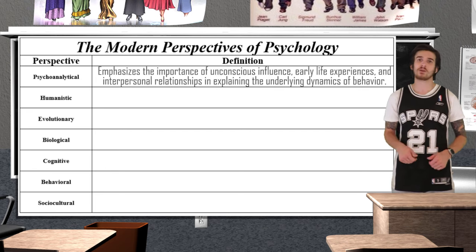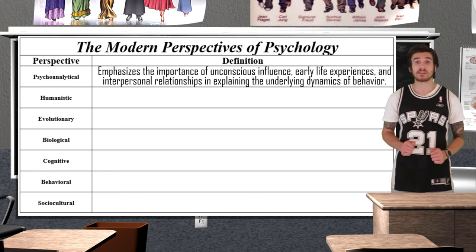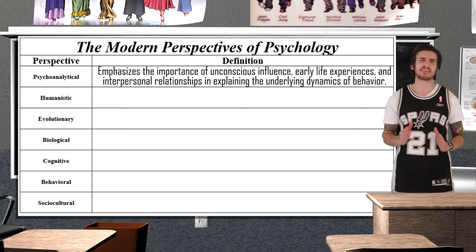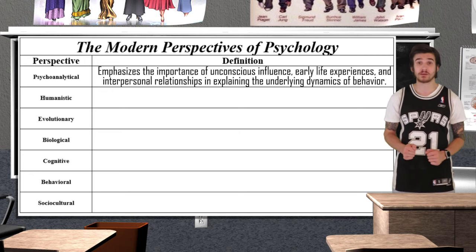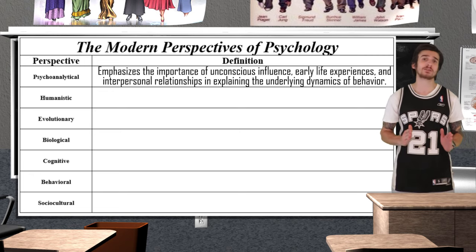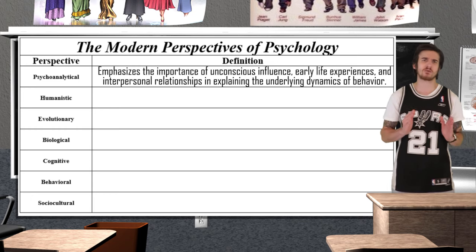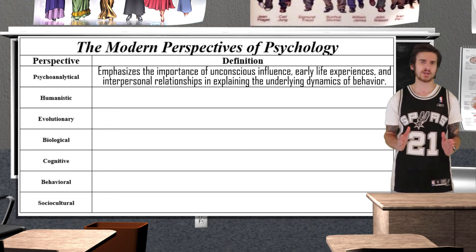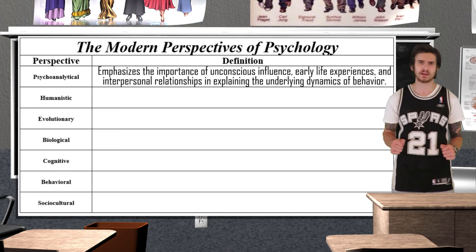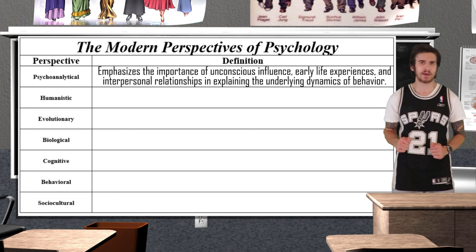The psychodynamic perspective is going to be based on the workings of Sigmund Freud. This perspective places a heavy emphasis on the unconscious mind and childhood experiences in determining our personality. A psychodynamic therapist might explain to Helga that the reason she shows irrational anger to Arnold is because she uses it as a defense mechanism to hide how she really feels about Arnold.